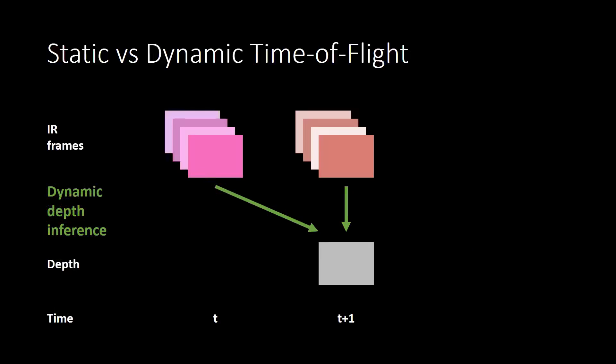Our proposed method is called dynamic time of flight and operates as follows. In every time step, we also capture a set of infrared frames. However, instead of using the same measurement pattern in every frame, we use different measurement patterns over time. We illustrate this by showing the infrared frames in different colors — purple and red. To infer DEVS, our dynamic time of flight algorithm uses information from multiple time steps, as shown by the green arrows.